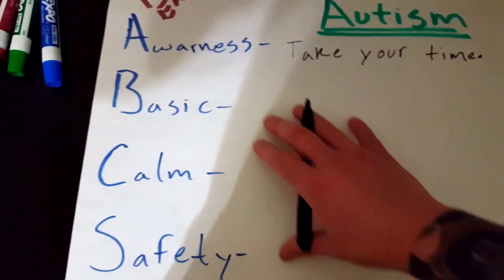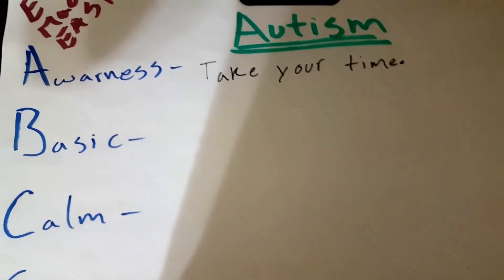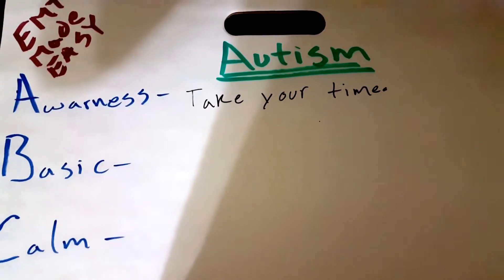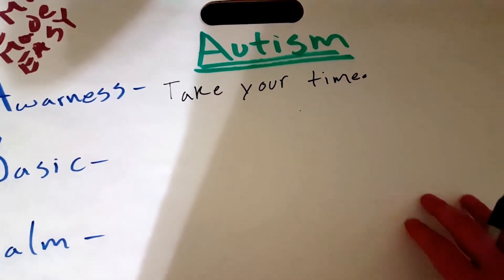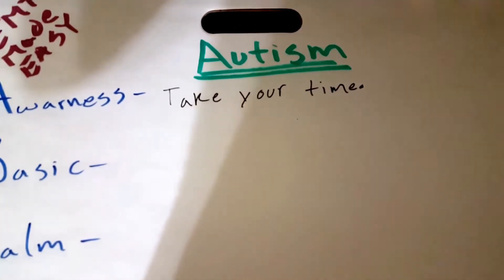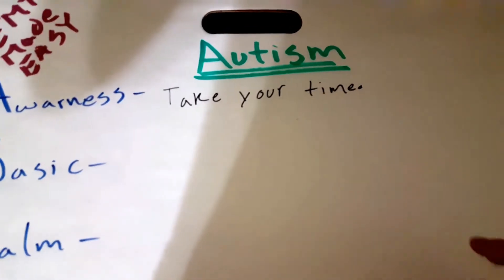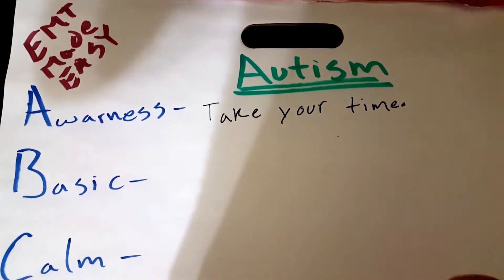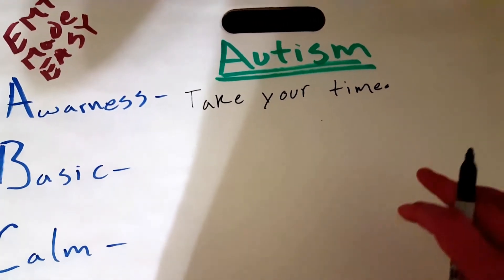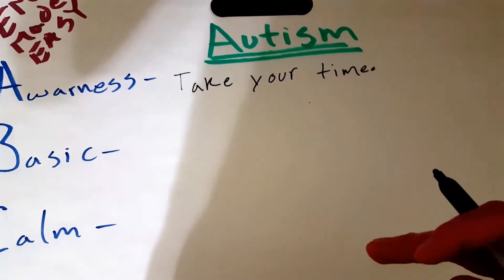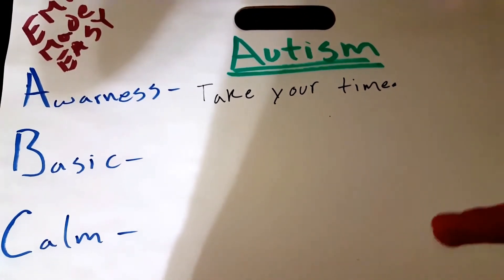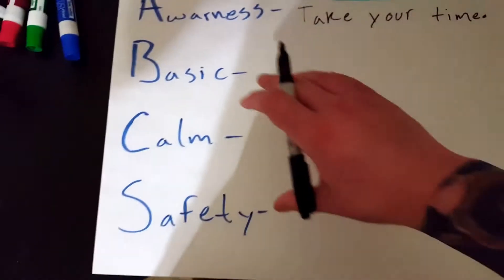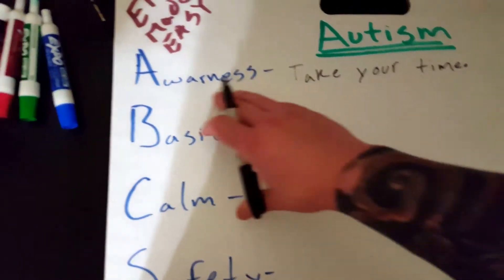A few things to know about autistic patients: some can't really read body language very well, eye contact for some of them is pretty awkward, and they also don't pick up on sarcasm, humor, or emotional feelings — though some do and some don't. Depending on which level of autism you're dealing with will determine what you're going to get from your patient, and that's why we approach these patients differently.